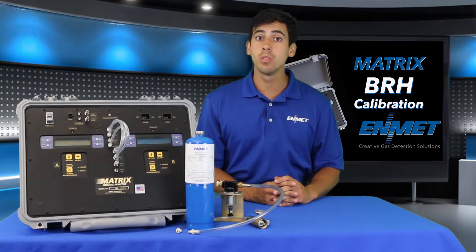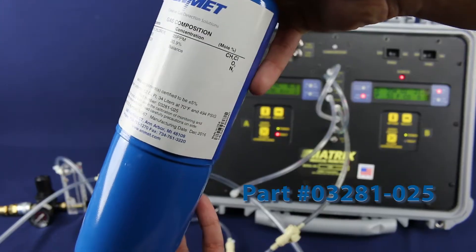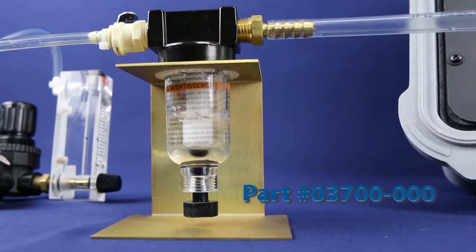Before you start you will need the following calibration equipment: 25 ppm methyl chloride which is the correlation gas used for calibration, a bubbler assembly, and a regulator.